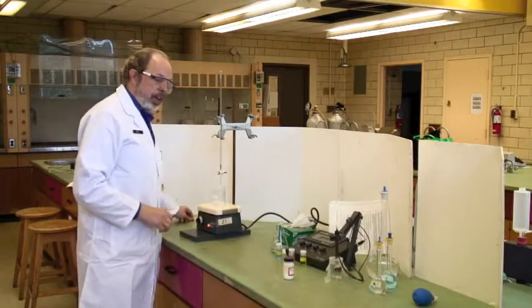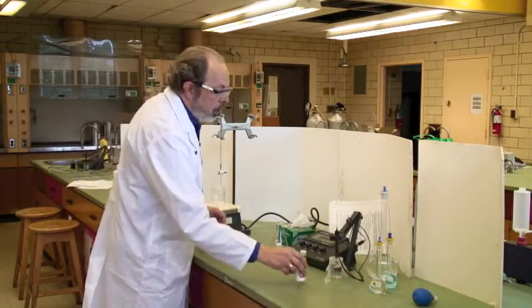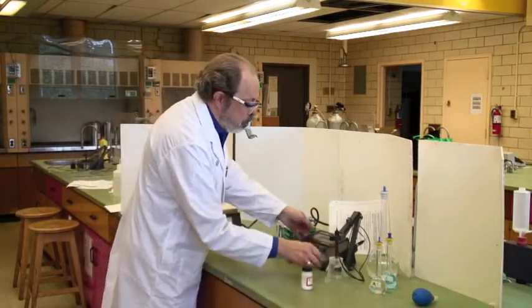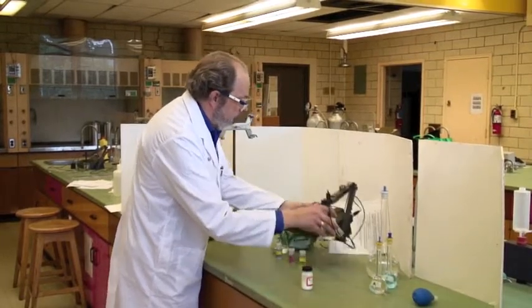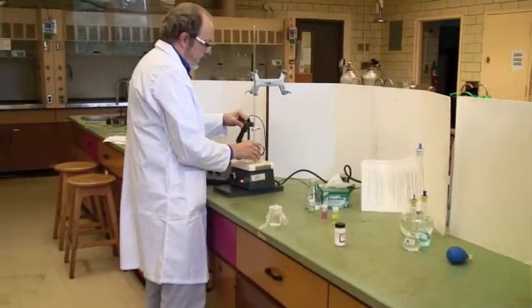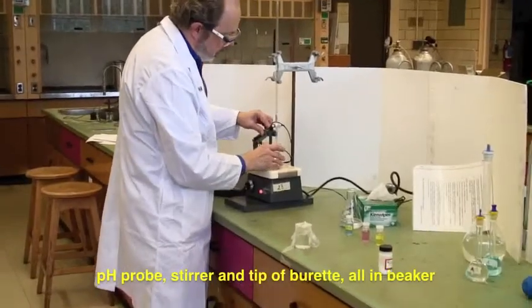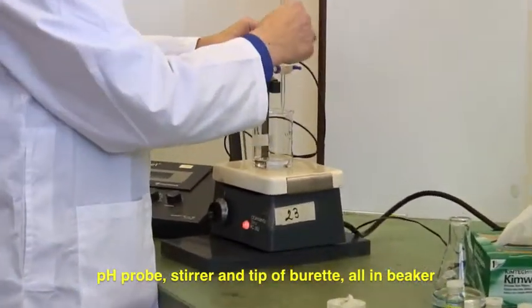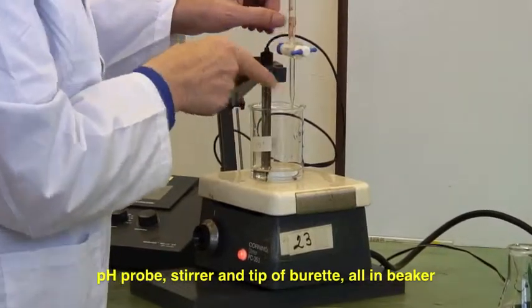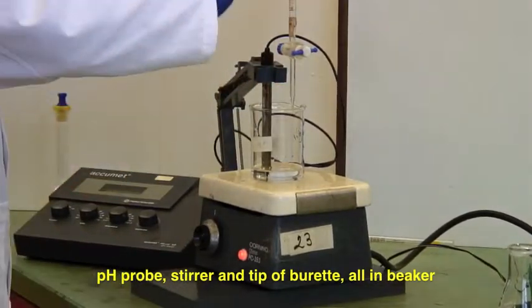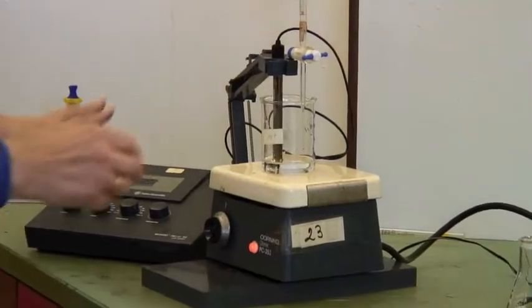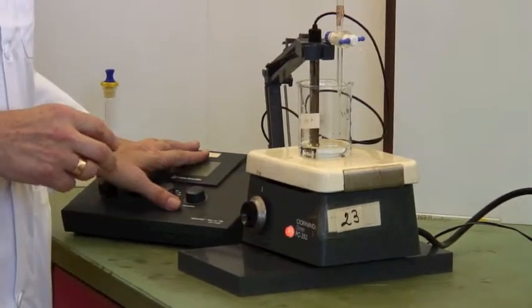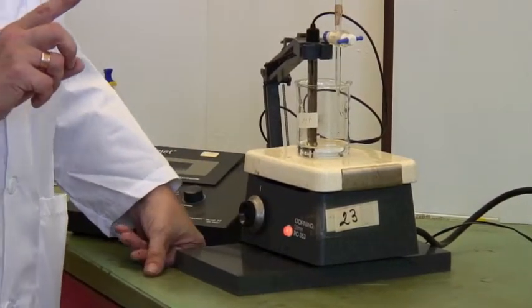Instead of a color indicator, you'll use a pH meter. Position it so the pH probe is in the beaker, along with the tip of the burette, ensuring nothing is lost. Turn on the pH meter. I'll show you how to calibrate it shortly.